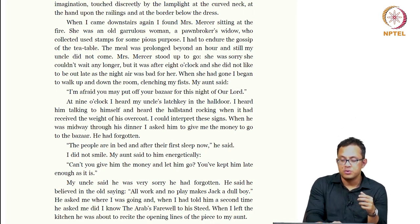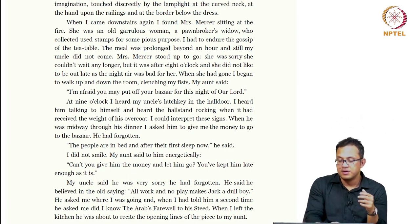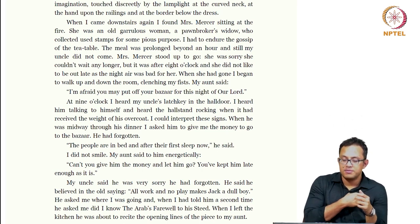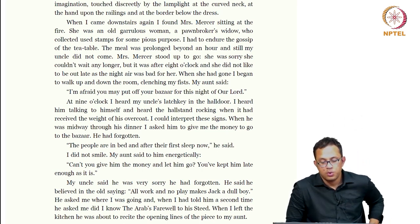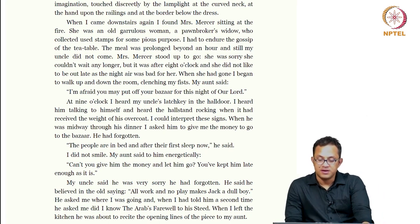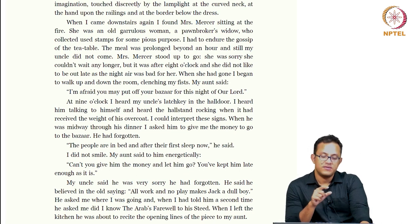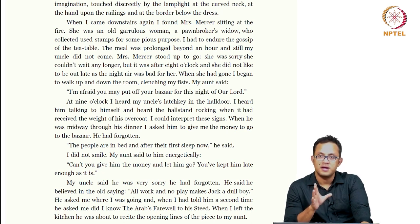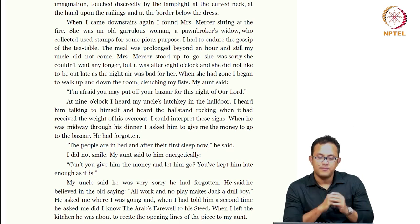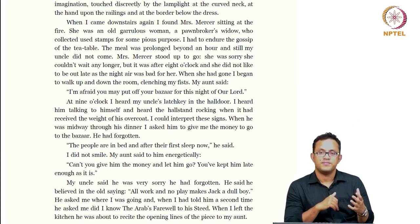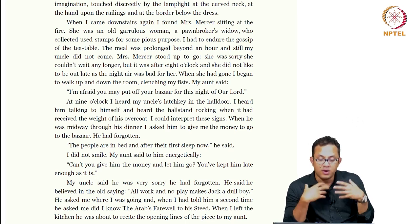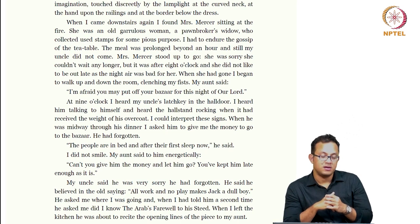Similarly, Mrs. Mercer collects stamps for some pious purpose, and the aunt refers to the bazaar as the bazaar of our lord. At nine o'clock the uncle comes home — the boy could interpret these signs. When the uncle was midway through his dinner, the boy asked him for the money to go to the bazaar. He had forgotten. The significance of the bazaar so paramount in the boy's imagination is so trivial in the uncle's — this demarcation between adult and childlike proclivities is very clearly mapped out.